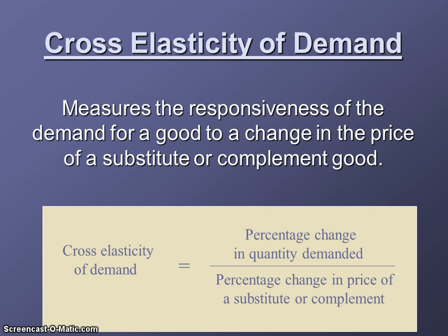When you're plugging in numbers, you still use that very specific midpoint formula. It would be quantity minus quantity one over the average of the two quantities of good A in the numerator, and then price minus price one over the average of the two prices of good B in the denominator.